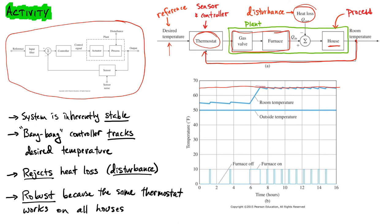The system will oscillate some margin above and below the desired temperature. Regarding disturbance rejection: yes, it operates in the environment of disturbances — we're able to still achieve our tracking despite the heat loss due to disturbances. Our house is not perfectly insulated and it still works.